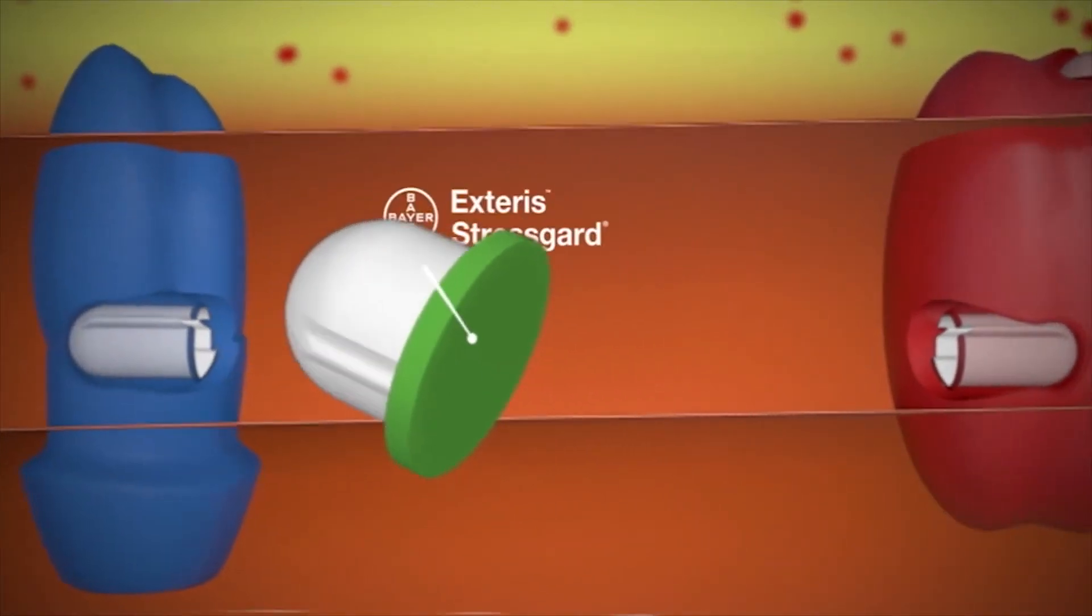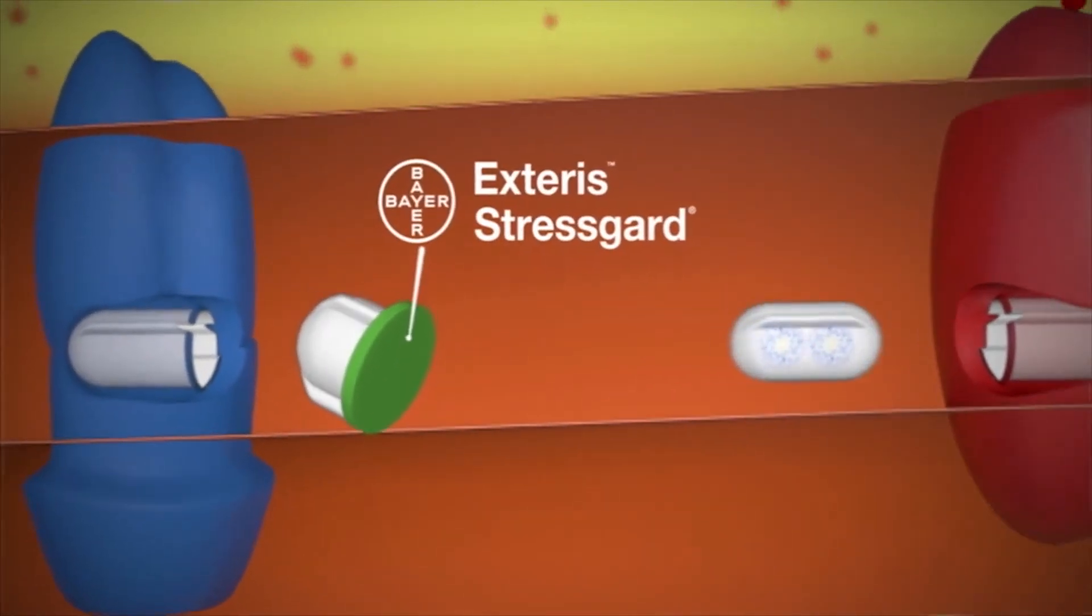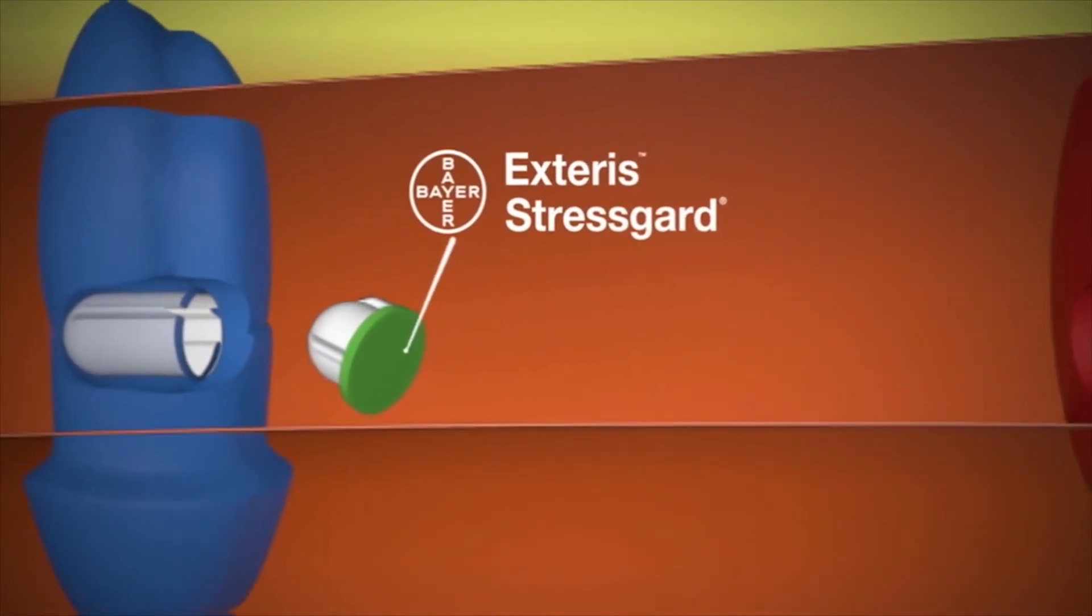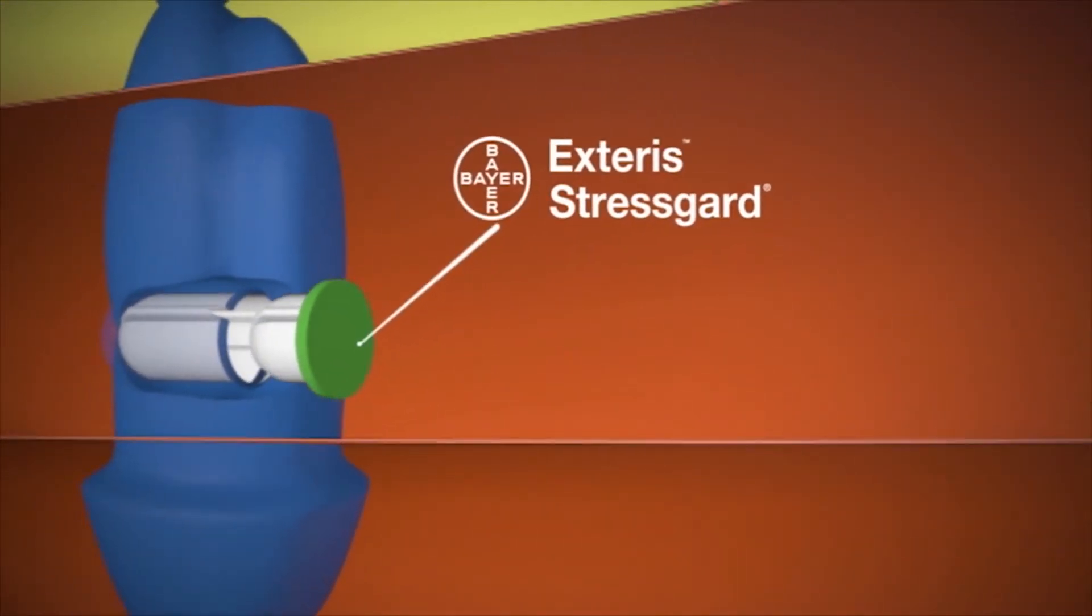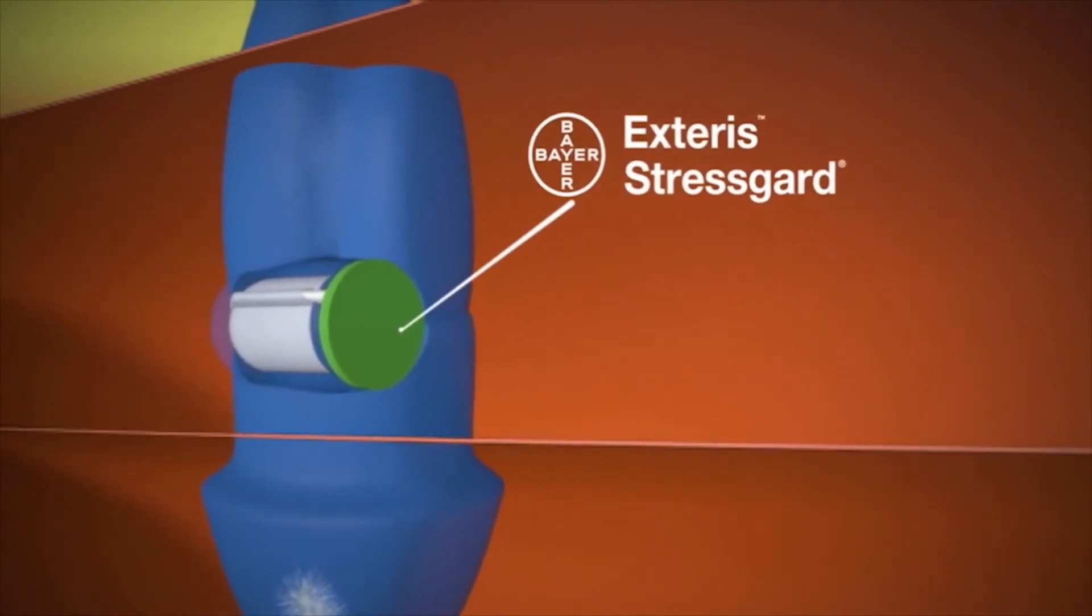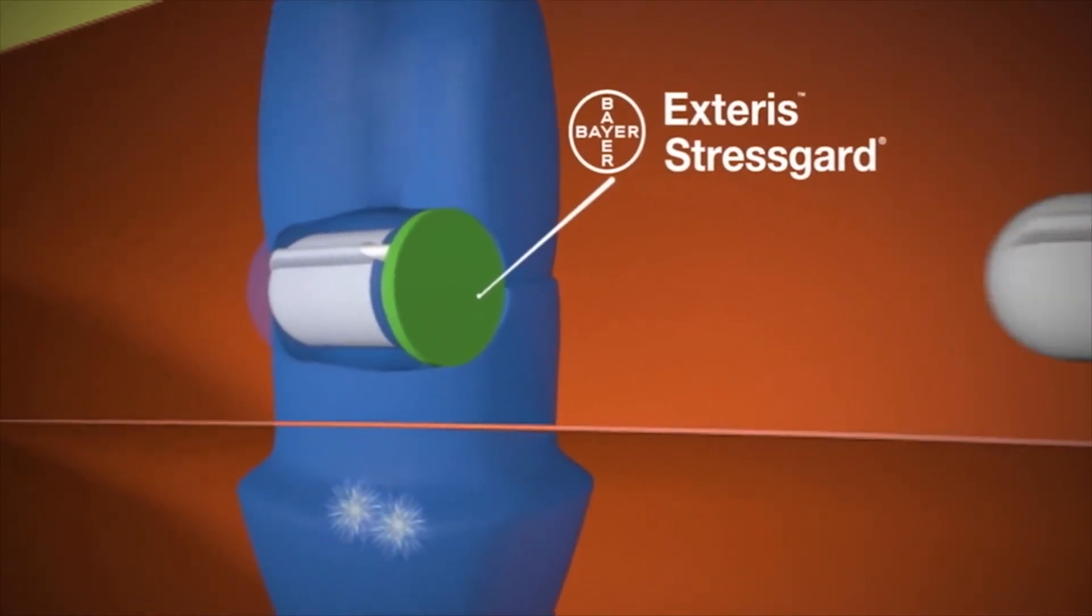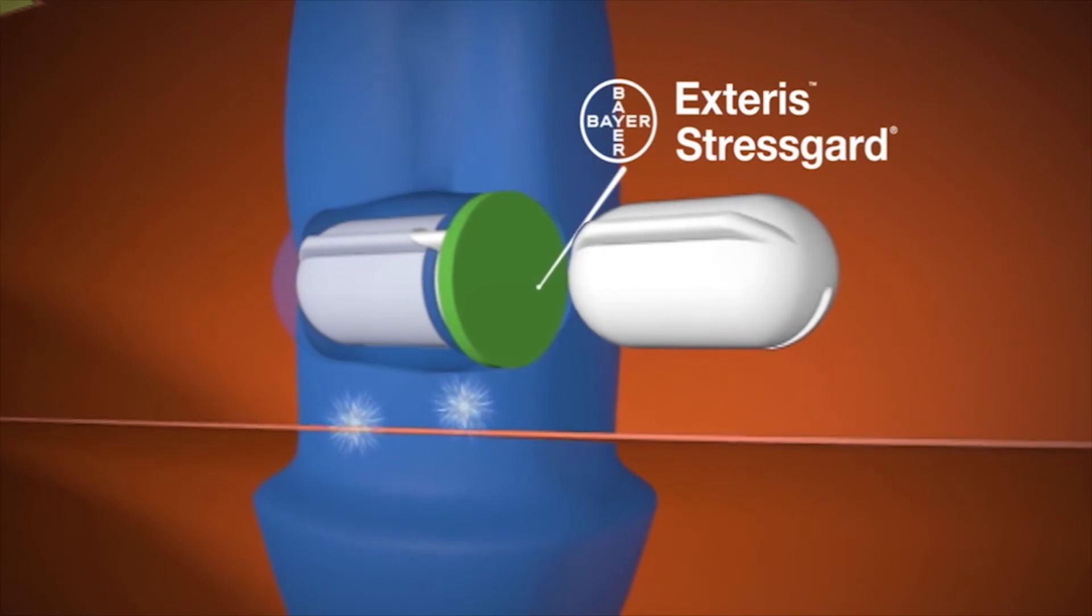The 4,000-strong research team at Bayer Crop Science has discovered molecules that park exactly in the space dedicated to the ubiquinone shuttle. So the transport of electrons from complex II to complex III is stopped.